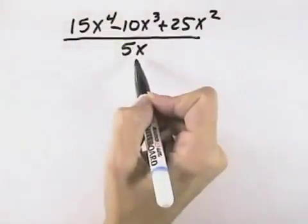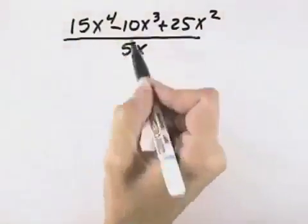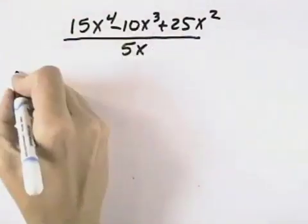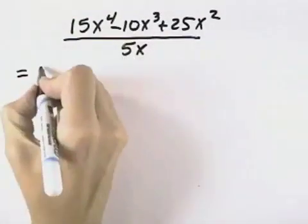Here we want to divide this trinomial by the monomial. To do that, we can actually split this into three division problems because we have a single term in the denominator.